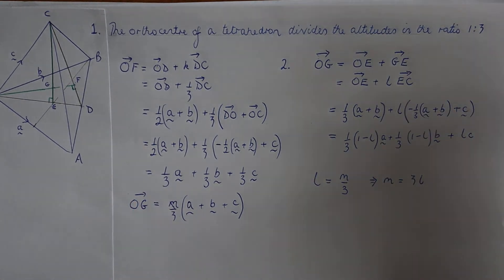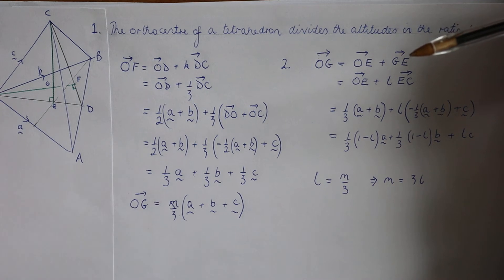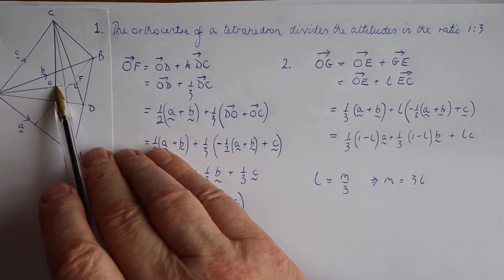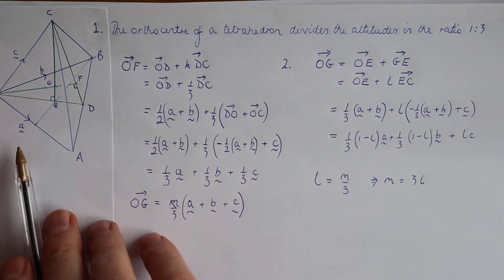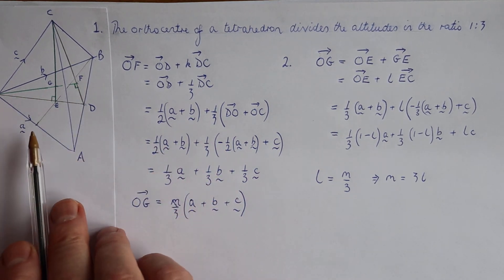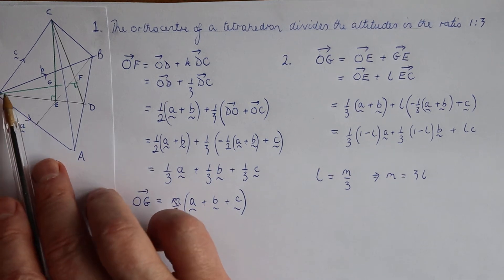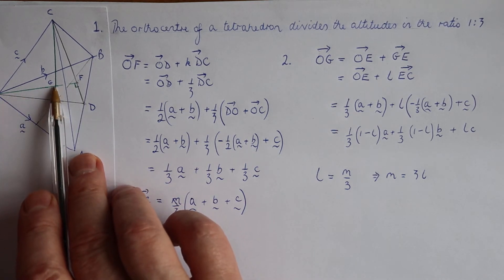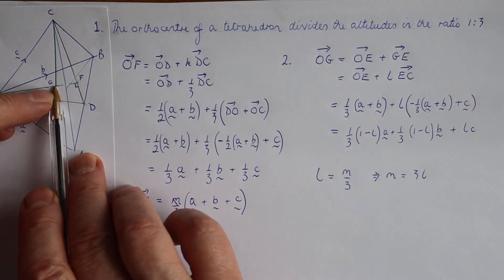Now let's look at the second part. We've found an expression for OG. We're saying that it's a fraction of OF, and OF is one third of A plus B plus C. So OG is going to be M times that, where M is a fraction.